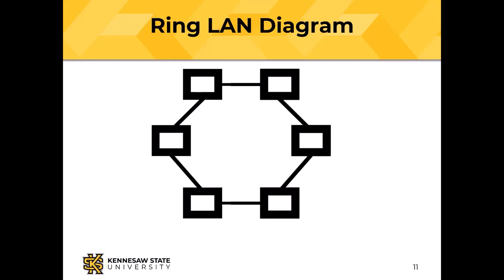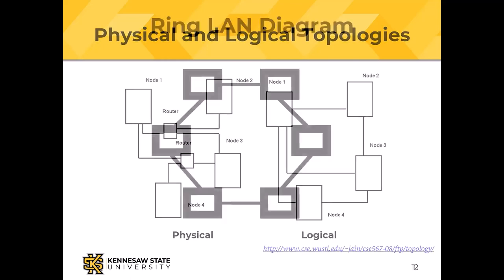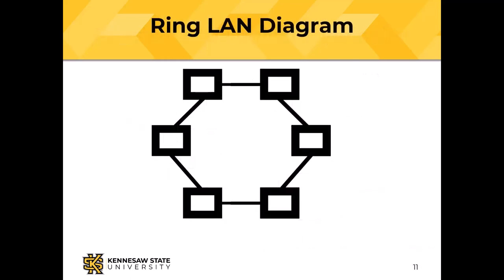In a ring topology, each station is connected to its upstream and downstream neighbors. Token ring, mostly obsolescent now, is a ring topology. Notice that in a ring topology there is no central switch.